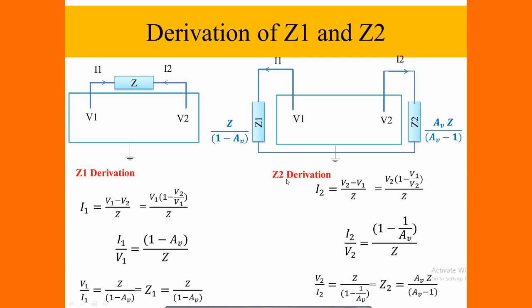And this is the corresponding Miller's theorem with respect to derivations of Z1 and Z2 values on either side of the circuit. This is used to simplify the corresponding circuit which is going to be having a complex representation with the element sharing between two different nodes.